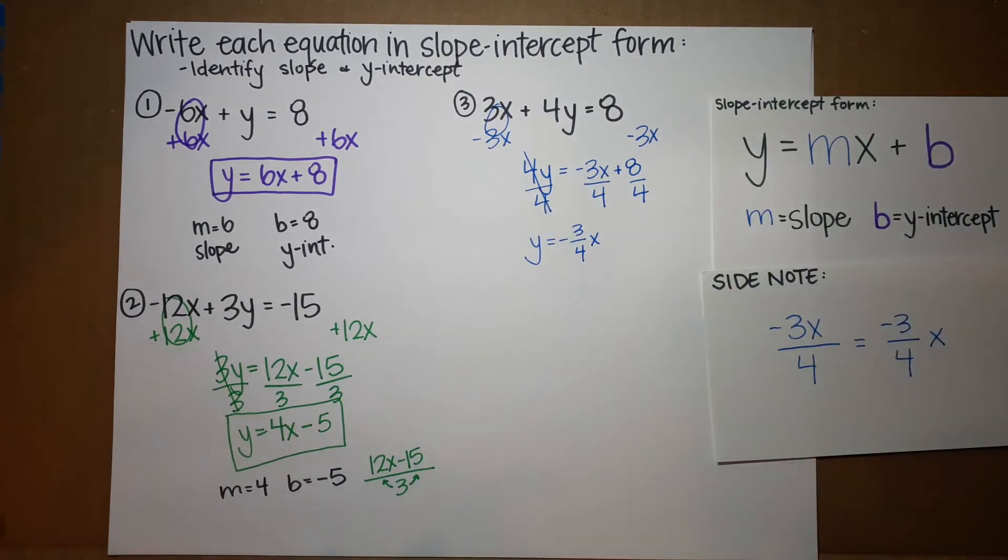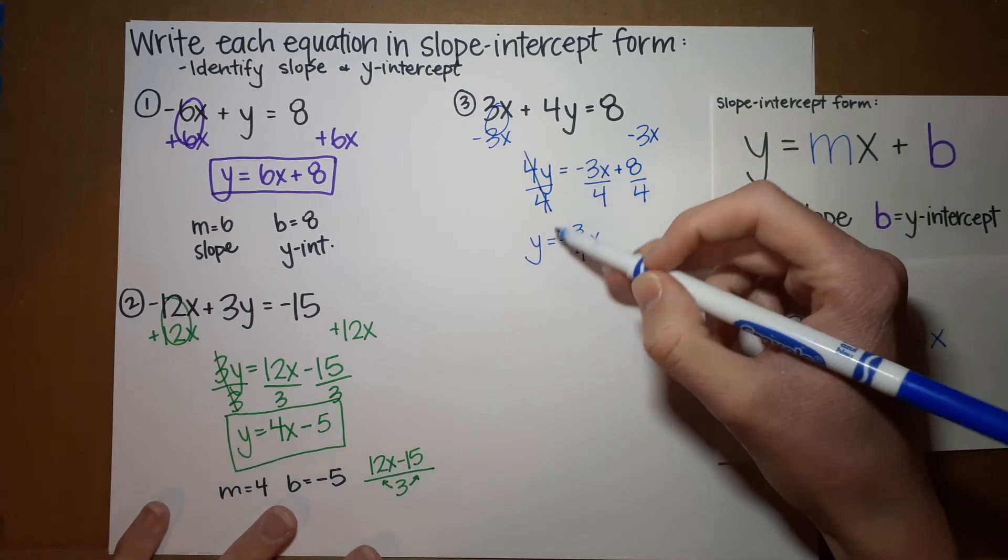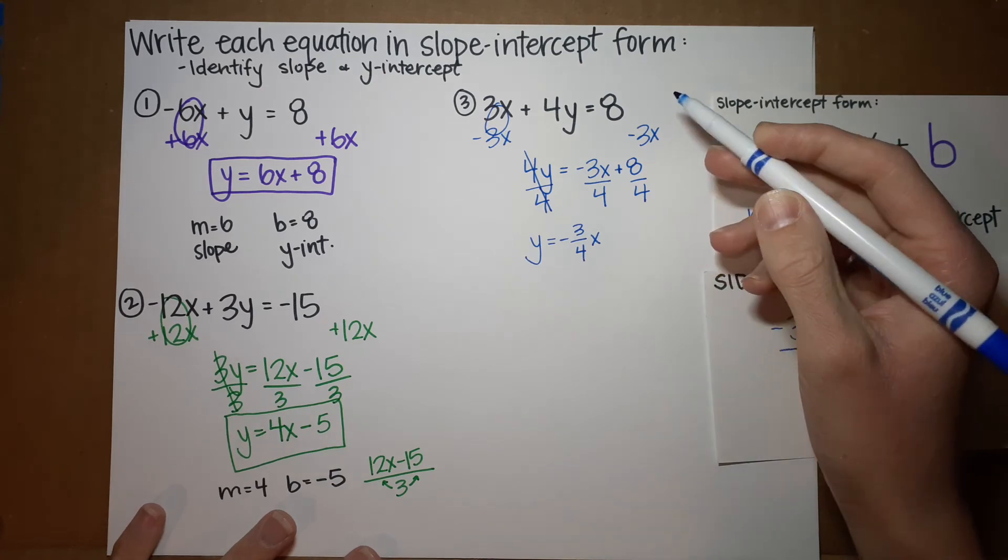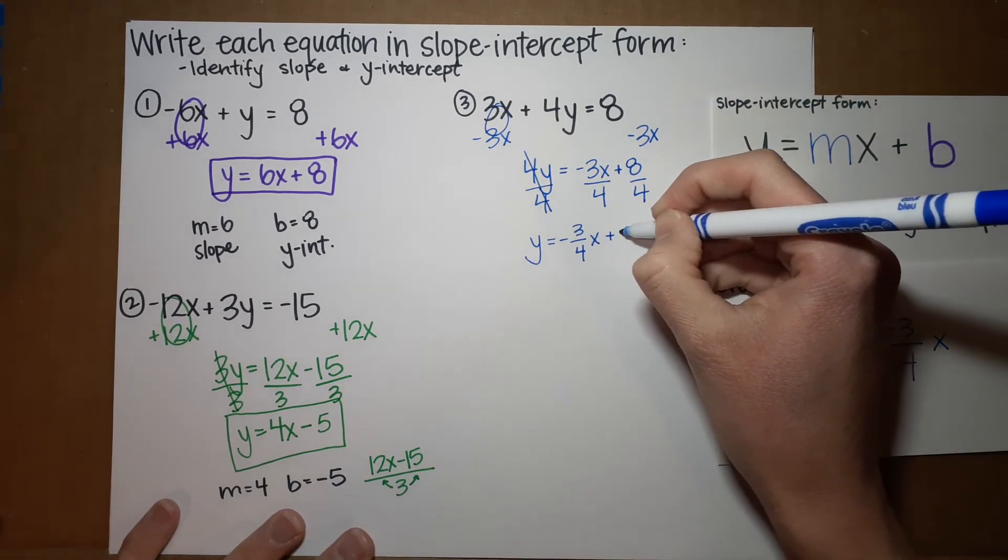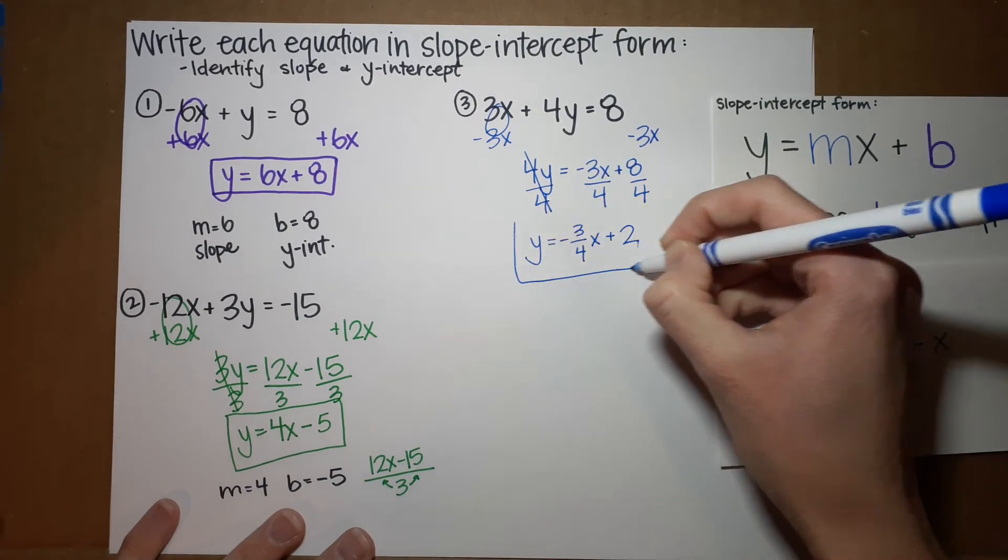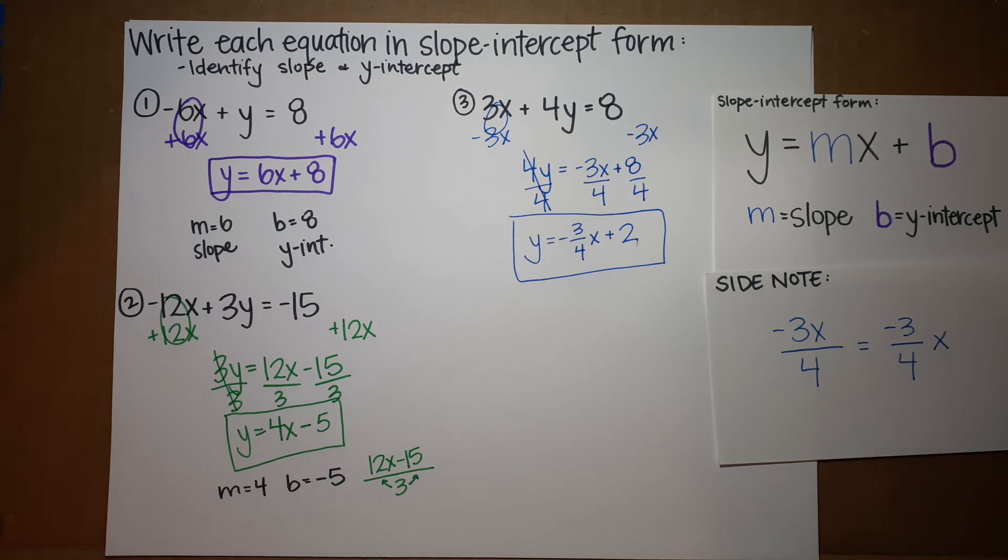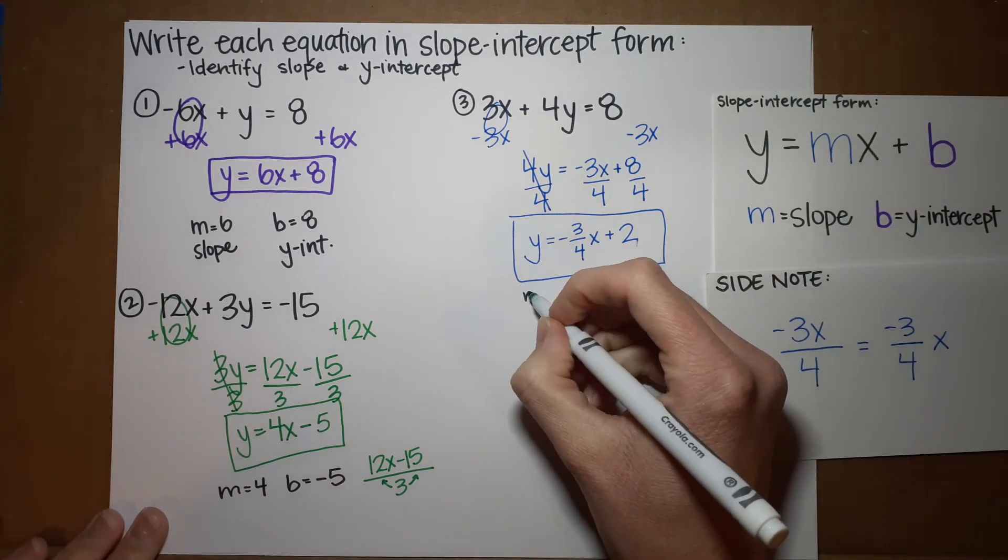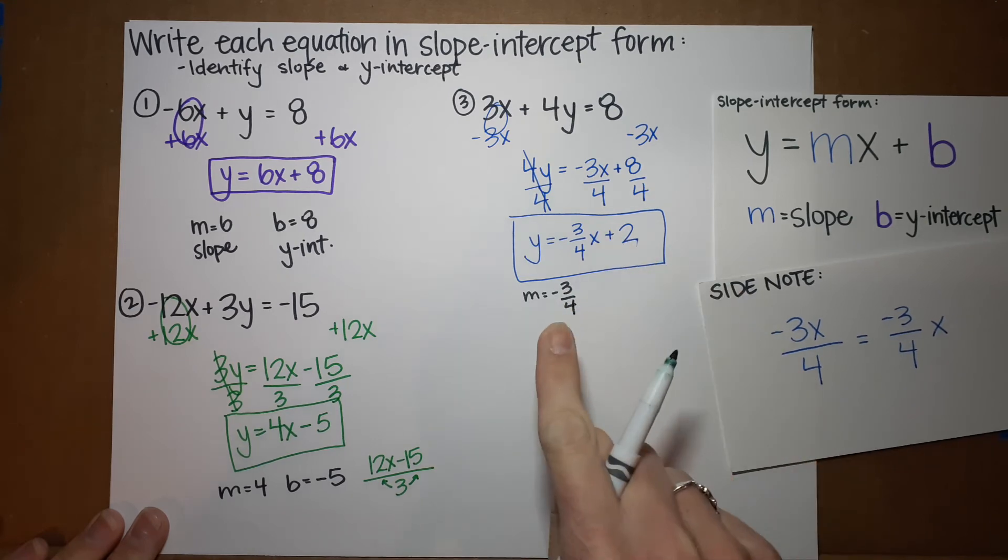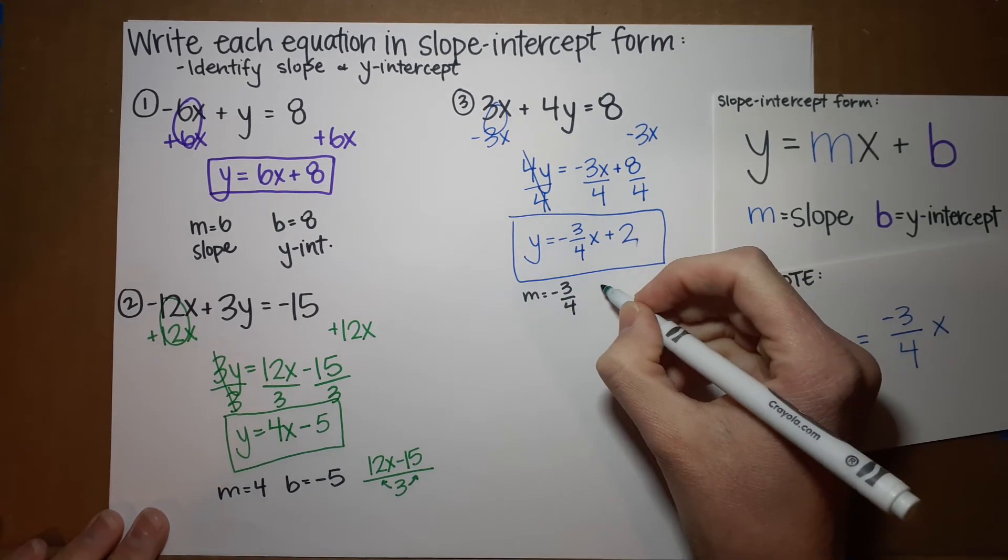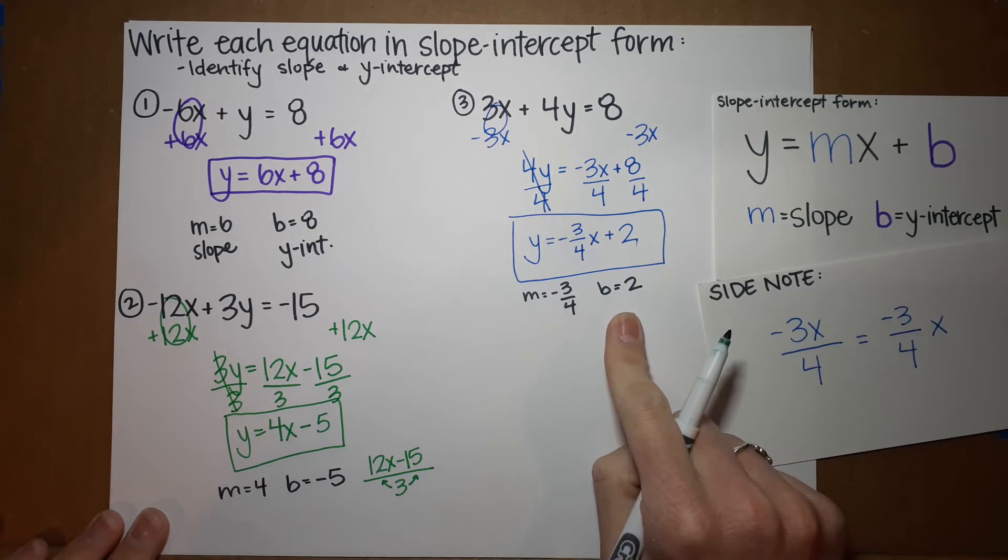One other cool quick side note. This negative can be on top, bottom, out front. It doesn't matter. I typically just stick it right out front. Now, we've got plus 8 over 4, which is 2. Oh, my goodness. We did another one. You did it. All right. M is negative 3 fourths. That's my slope. B is 2. That is my y intercept. Okay? You feeling okay? You'll understand what those are soon if you don't already.